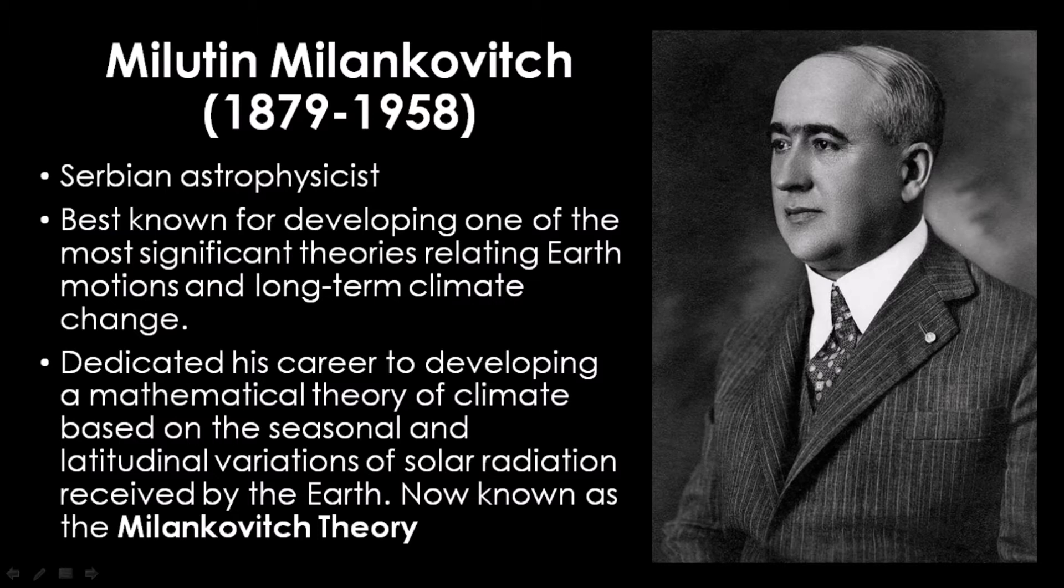He dedicated his career to developing a mathematical theory of climate based on the seasonal and latitudinal variations of solar radiation received by the Earth, which today is what is known as the Milankovitch theory, stating that as the Earth travels through space around the sun, we have variations in three elements of the Earth-sun geometry, which combine to produce variations in the amount of solar energy that reaches the Earth.